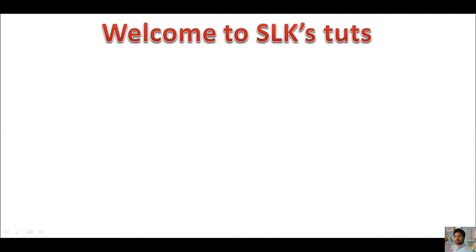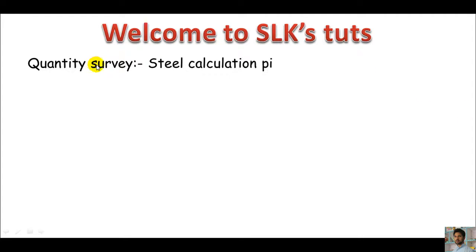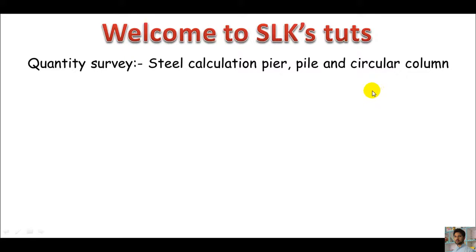Assalamu alaykum YouTubers, welcome back to SLK TOOTS. Alright, here in this section we'll be talking about steel calculations for piers — of course, for piles and circular columns. These three — pile, piers, and circular columns — are just the same things with different names. How can I find steels just for these guys? This is quite simple, just keep watching.